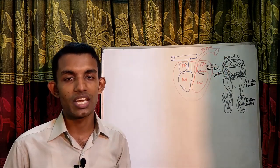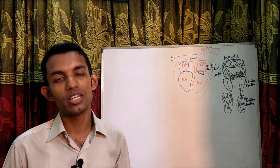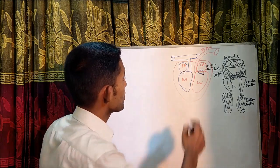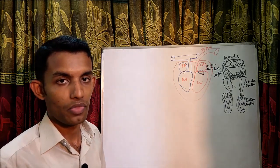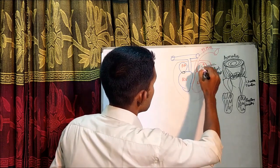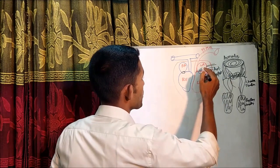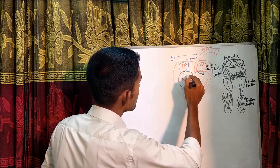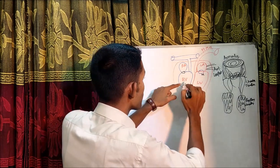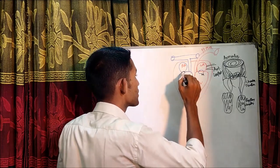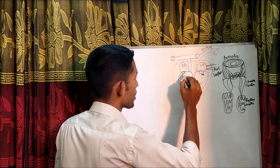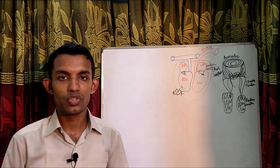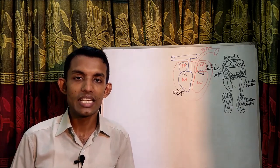Normally the mitral valve orifice is about five square centimeters; in severe mitral stenosis it can become one square centimeter. Patients remain asymptomatic if the valve area is up to two square centimeters. Left atrial dilatation and hypertrophy may gradually develop atrial fibrillation. Increased left atrial pressure causes pulmonary venous congestion, which in turn causes pulmonary hypertension, right ventricular overload, right ventricular dilatation, tricuspid regurgitation, and eventually right heart failure.